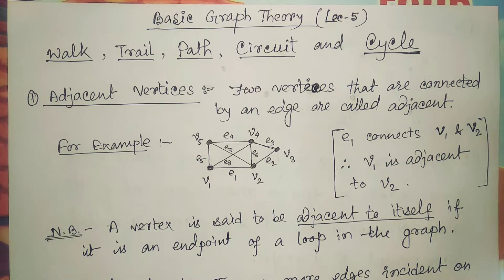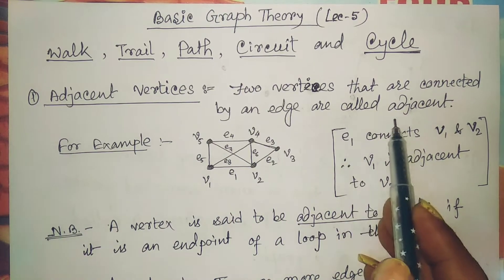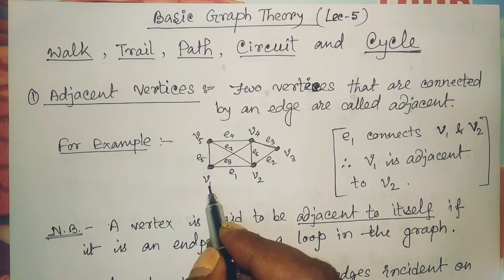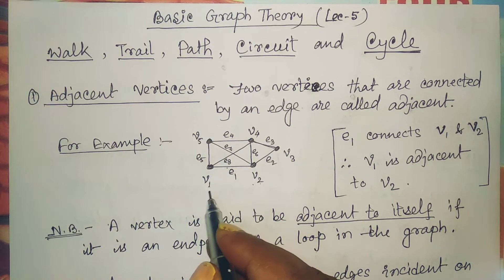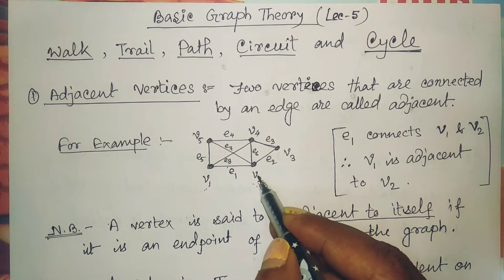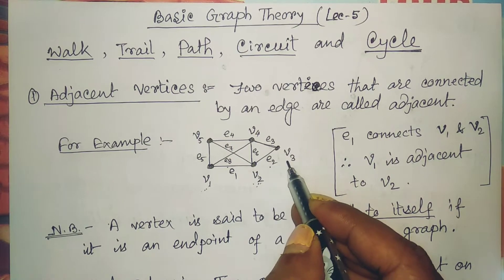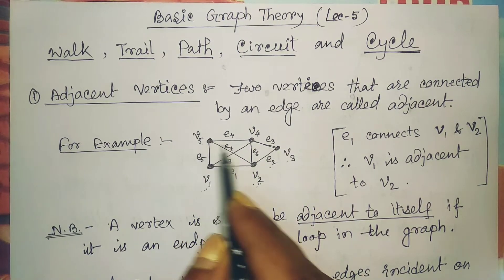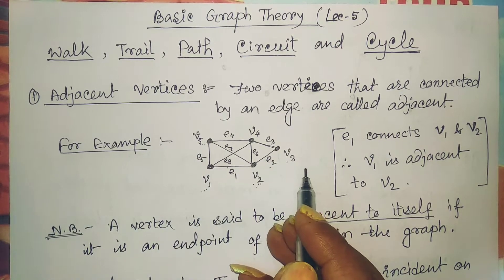Adjacent vertices are two vertices that are connected by an edge. For example, in this graph, if we consider v1 and v2, these two vertices are connected by an edge, so v1 and v2 are adjacent vertices. Similarly, v2 and v3 are adjacent via edge e2. v5 and v3 are not directly connected, so v3 and v5 are not adjacent vertices.